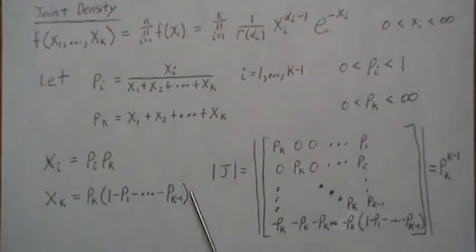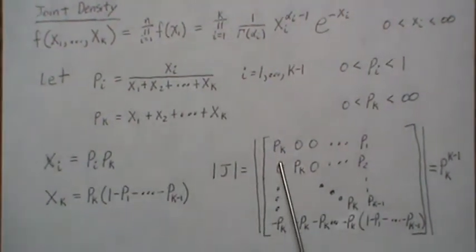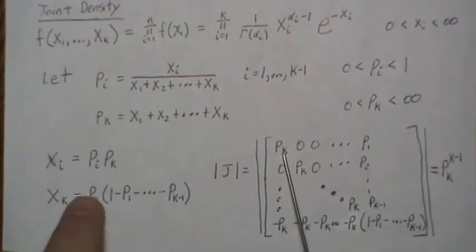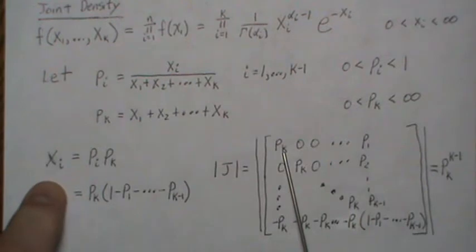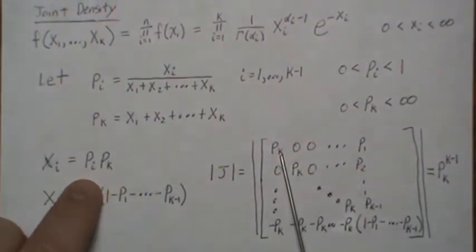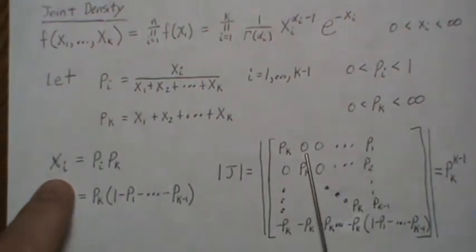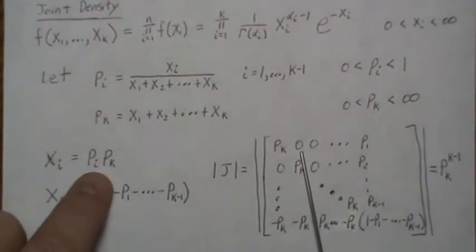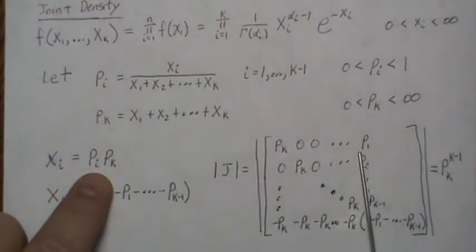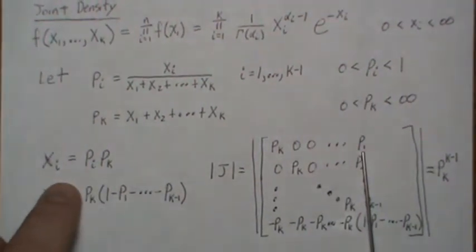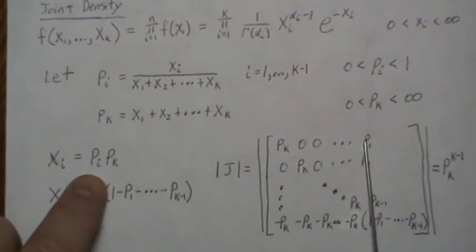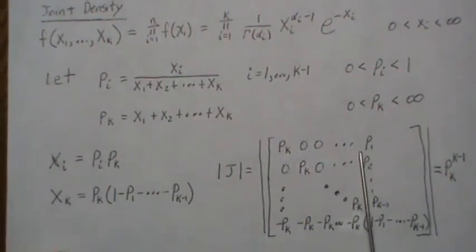Now the Jacobian is the determinant of the Jacobian matrix. It's the partial of X1 with respect to P1 which is PK, and then partial of X1 with respect to P2 which is 0, and then all the way until you get to the Kth term, X1 with respect to PK which is P1.